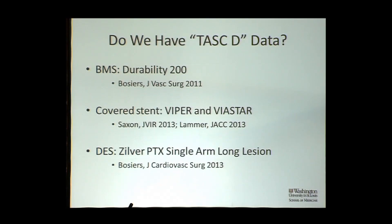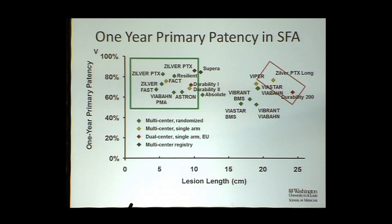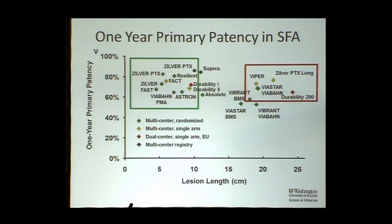Do we have TASTI data? Yes, we have some. There's the Durability 200 study done by Bosiers in Europe looking at bare metal stents. We have two experiences with the Viabon: the Viper single-arm trial and the Viastar randomized trial from the U.S. and Europe respectively. And from Bosiers again, in the Zilver single-arm experience, they broke out the long lesions and looked at that. Looking out to the far right of the slide, these are all one-year primary patencies. What we're seeing is that with modifications of the Viabon graft, with some drug, and even with some good plain bare metal stents, at least at one year we're seeing an acceptable initial primary patency rate — though it's going to continue to fall off over time.